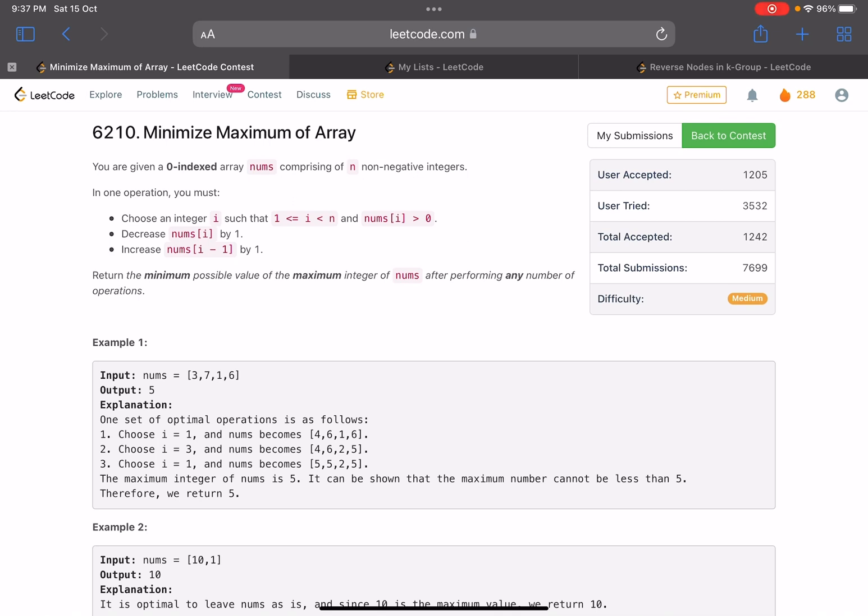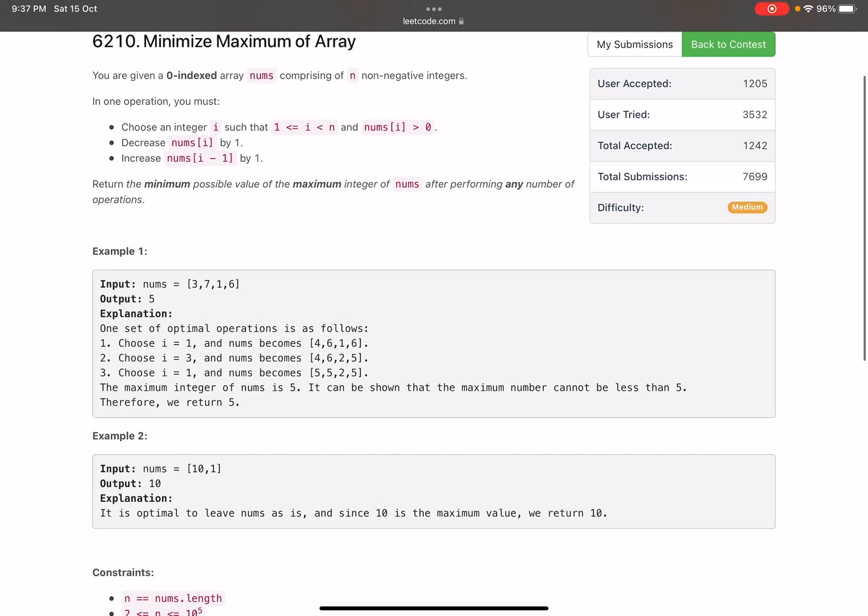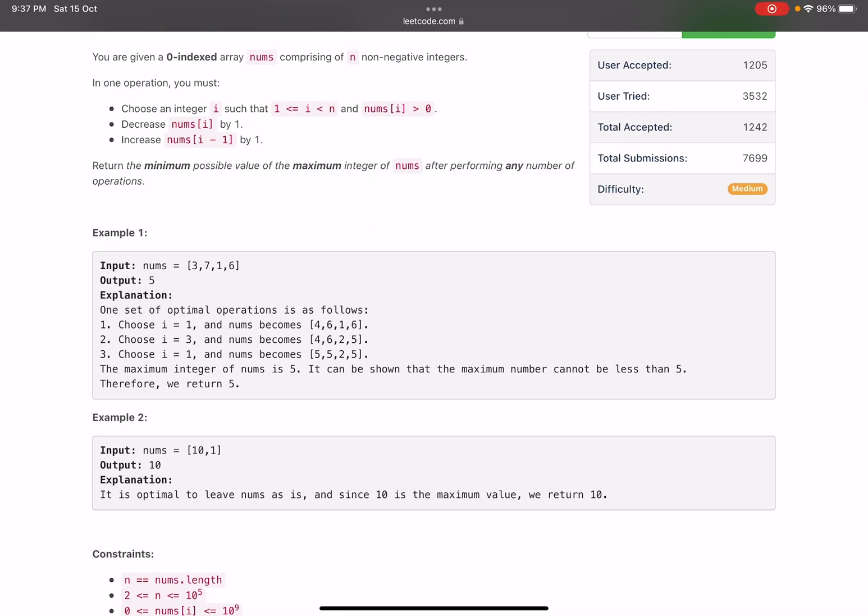The problem statement says that you are given a zero indexed array nums comprising of n non-negative integers. In one operation, you need to choose an integer i such that i lies between 1 to n and nums[i] is greater than 0. You need to decrease the chosen number by 1 and increase the number just before it, nums[i-1], by 1. So decrement the current number and increment the previous number. Return the minimum possible value of the maximum integer of nums after performing any number of operations. Let me explain with the help of the given example.